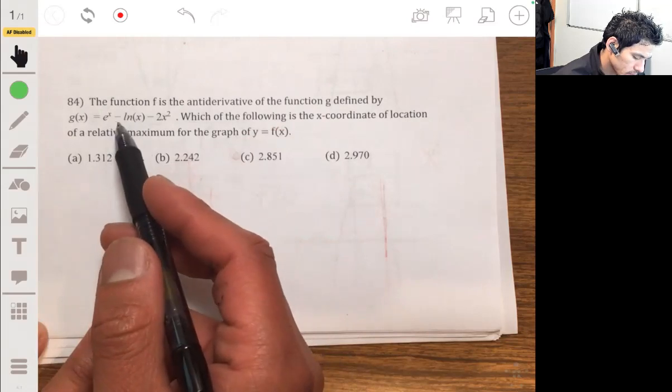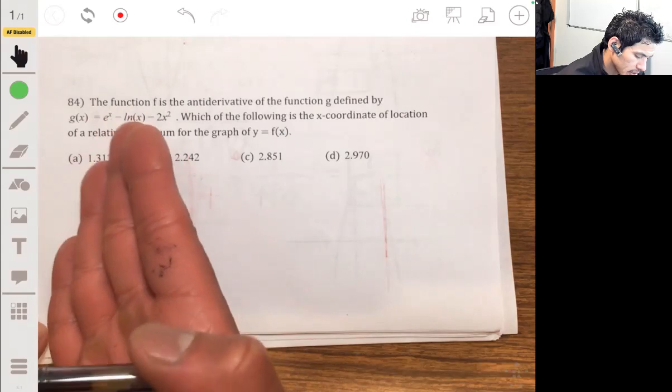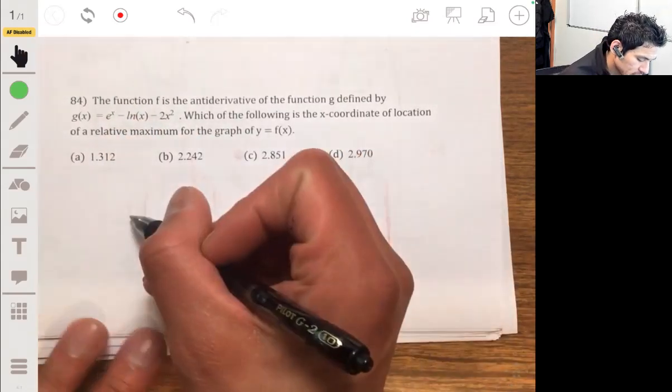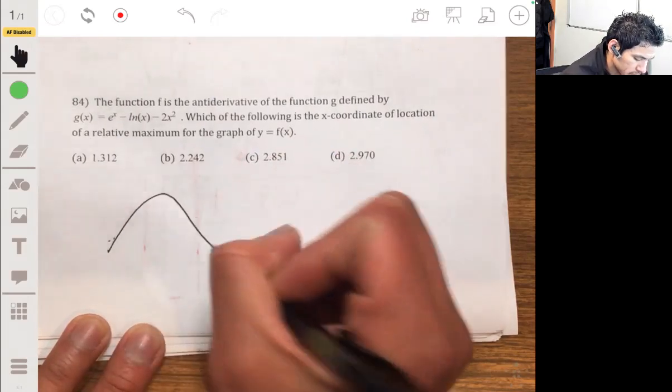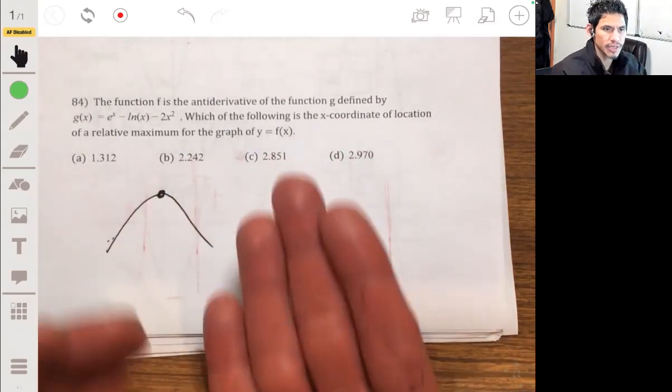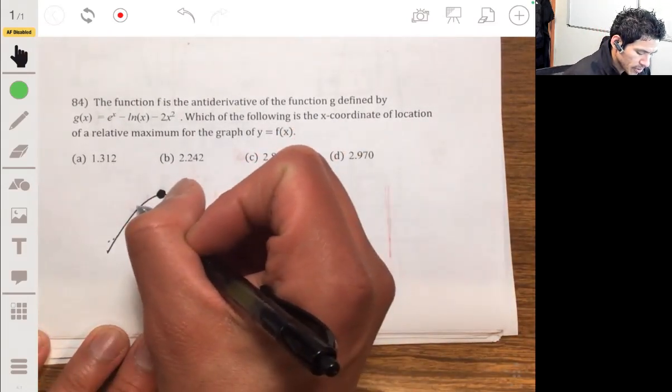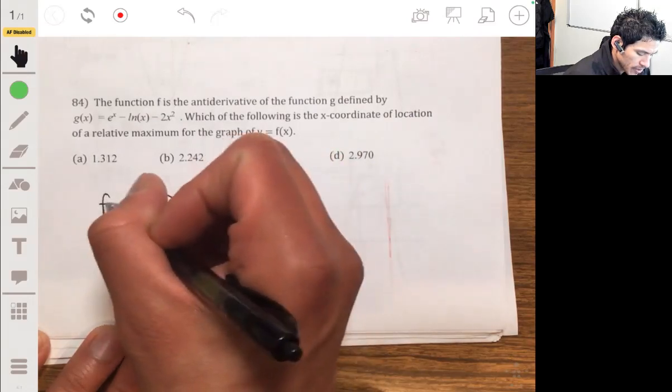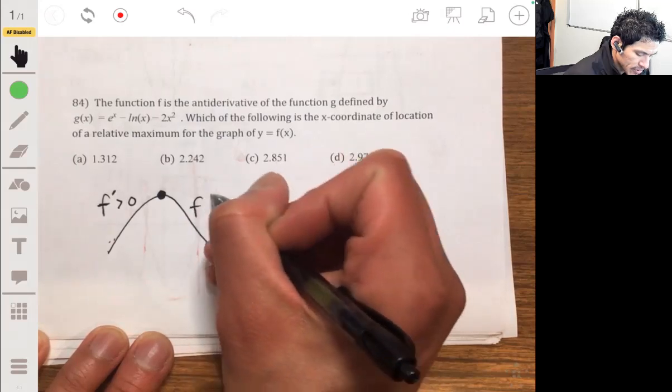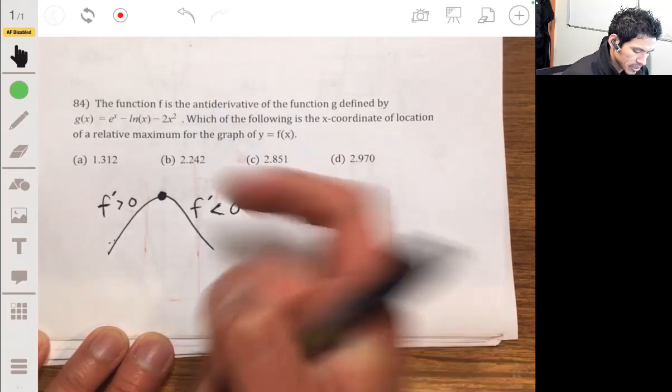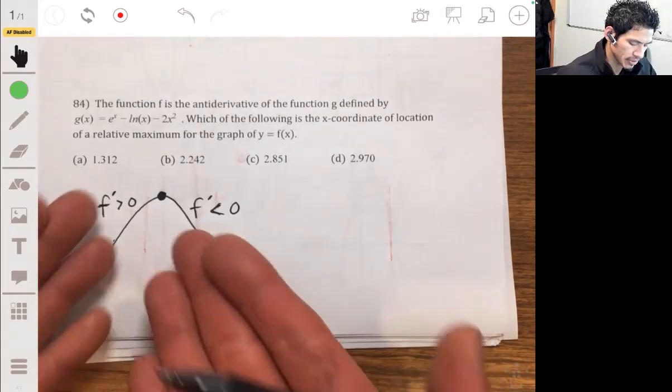Let's just remember what we need to understand about a relative maximum. A relative maximum on a graph is kind of like a peak. And for it to be a peak, that means before the peak the derivative has to be positive, and after it the derivative has to be negative, because it has to be increasing before and decreasing below. That's just how it works. You know, just think about a hill or something.